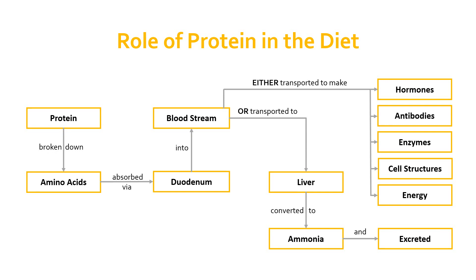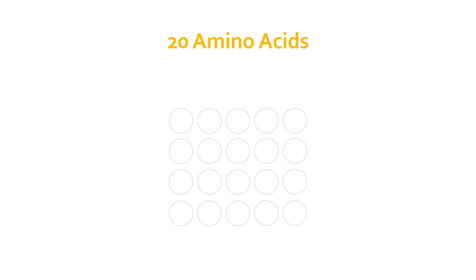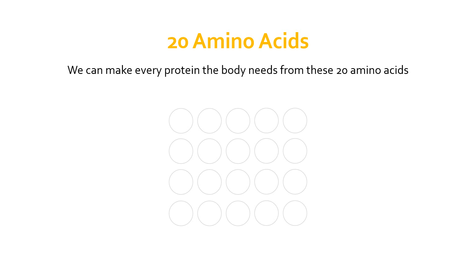So that's the role of protein in the diet — loads of really useful things are created from these building blocks, these amino acids, that we get initially from consuming protein. All of the proteins that we require as humans can be created or synthesized from just 20 amino acids. Whether that's hormones, antibodies, or cell structures, all of those things can be created out of just 20 amino acids, and we group those 20 into two groups.